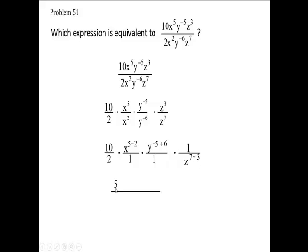So 10 over 2 is 5, x to the 5 minus 2, y to the 6 minus 5 or negative 5 plus 6. On the bottom I have my 7 minus 3, and let's do this. Let's go ahead and do it.